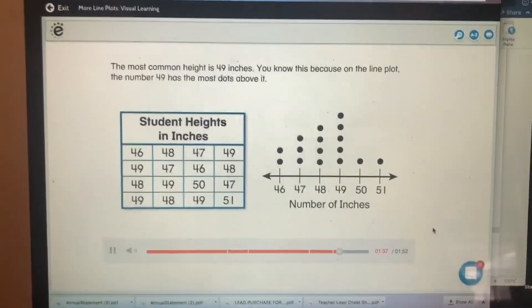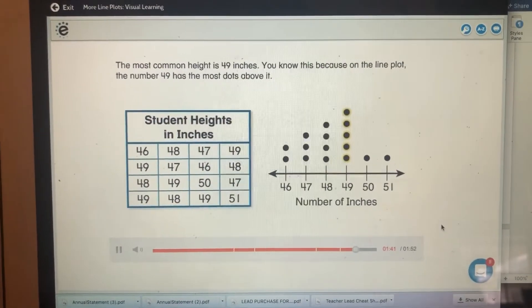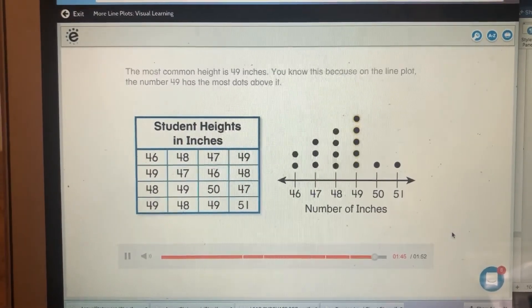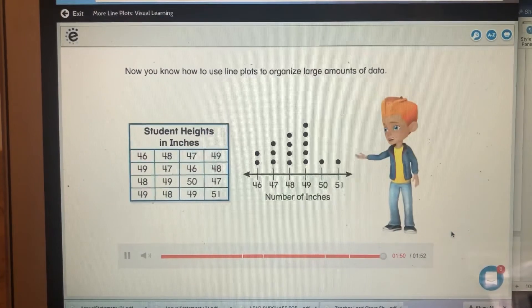The most common height is 49 inches. You know this because on the line plot, the number 49 has the most dots above it. Now you know how to use line plots to organize large amounts of data.